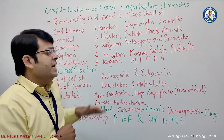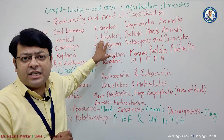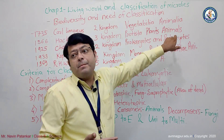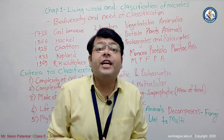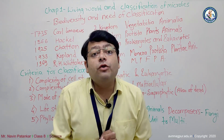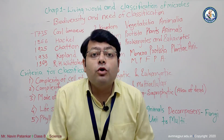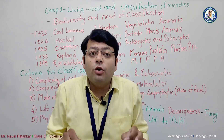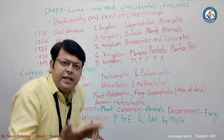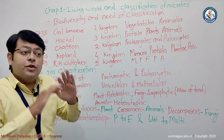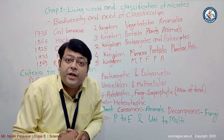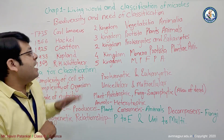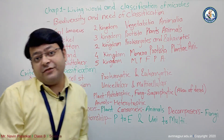A new discovery was made in 1866 by scientist Haeckel. He proposed a three-kingdom classification system, which included Protista, Plantae, and Animalia. However, this system did not account for fungi or microbes, and did not cover all living systems in the world.